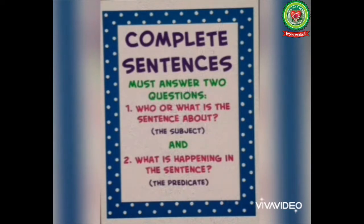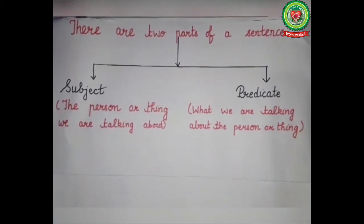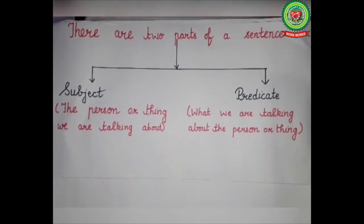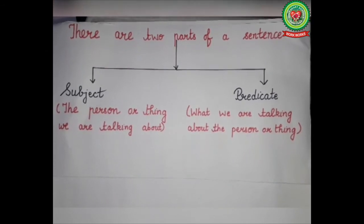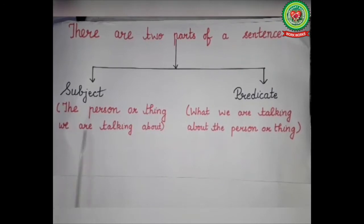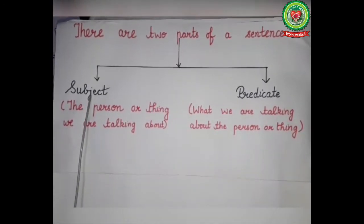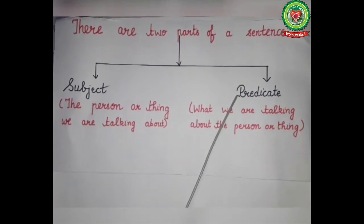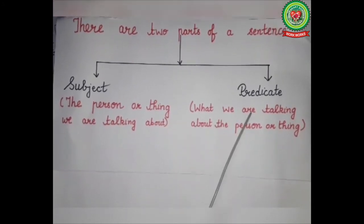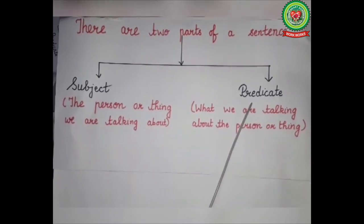We conclude that a sentence has two main parts: subject and predicate. Let us discuss the two parts of a sentence in detail. Number one, subject: the person or thing we are talking about is known as the subject of the sentence. Number two, predicate: what we are talking about the person or thing is known as the predicate of the sentence.